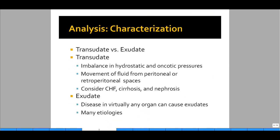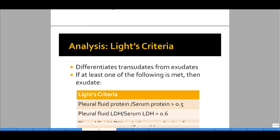How do you characterize pleural effusions? We separate them into transudates and exudates. Transudates result from imbalances in hydrostatic and oncotic pressures, causing movement of fluid from peritoneal or retroperitoneal spaces into the pleural spaces. Consider the big three organs when you have a transudate: CHF (heart), cirrhosis (liver), and nephrosis (kidneys). Exudates can be caused by many different organ dysfunctions, making them harder to narrow down. But if it's a transudate, you know it's the big three organs.